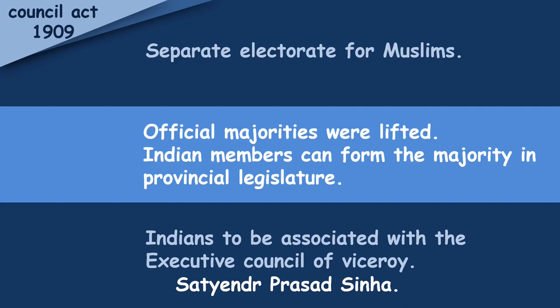Here you can see that Indians were gaining their share in the legislature and in the executive. But the evil of communal divide would have its inevitable consequences. We remember Minto for this separate communal electorate, while the other two achievements were Indian majority in provincial legislative councils and Indian member Satyendra Prasad Sinha in the Viceroy's Executive Council.